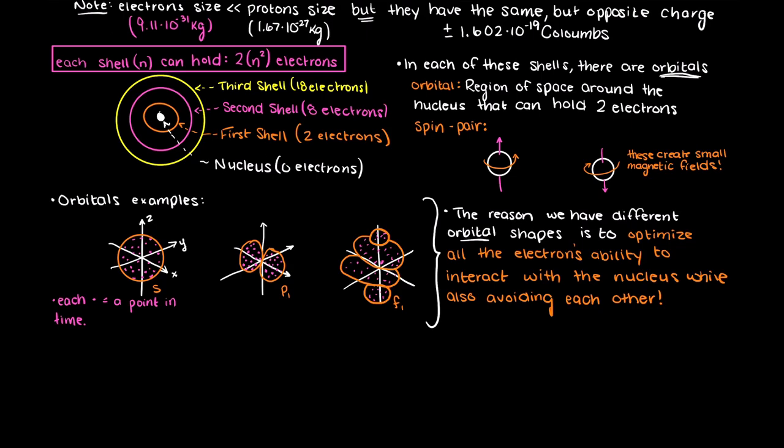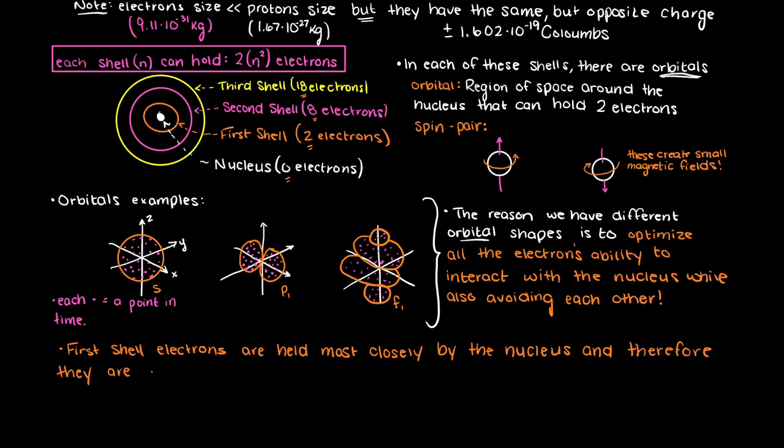As we get further from the nucleus, we can hold more electrons in each subsequent shell, because we have more free space to put the electrons without them interacting with each other. The electrons in the innermost shell are held the tightest to the nucleus, and these are the most stable, which is why we call them the lowest energy electrons.